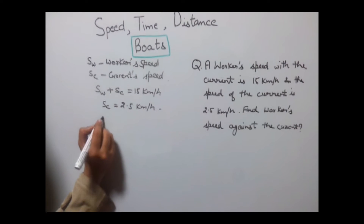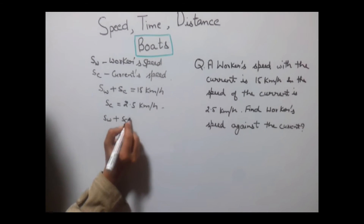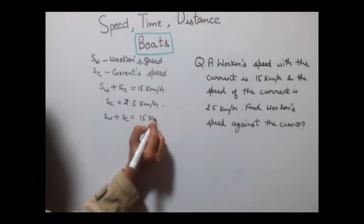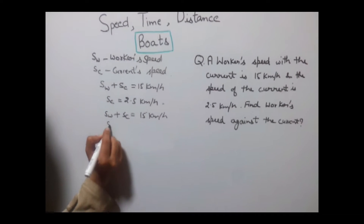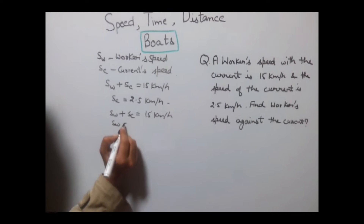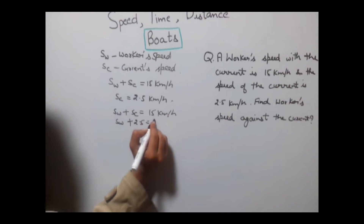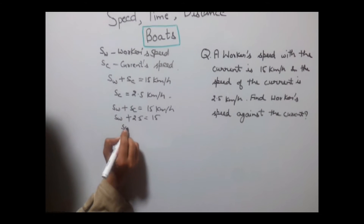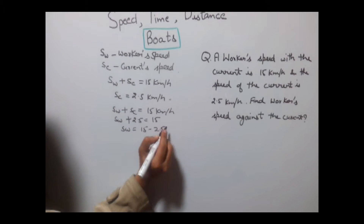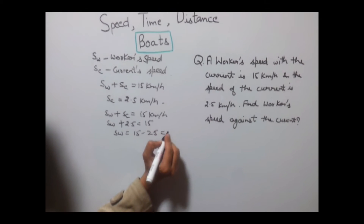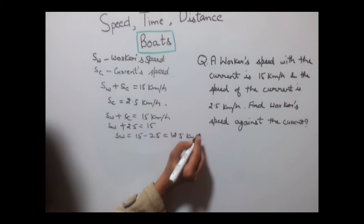So SW plus SC equals 15. Putting the value of SC: SW plus 2.5 equals 15. Therefore SW equals 15 minus 2.5, which equals 12.5 km per hour.